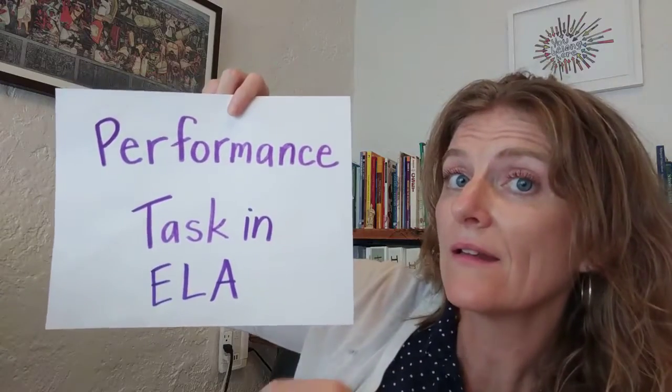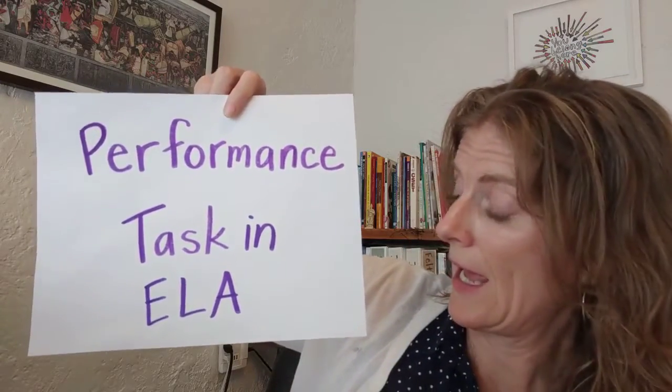So let's look specifically at what the CAASPP performance task is asking you to do — what is it assessing? We are specifically looking at the performance task part. Every year, what the CAASPP performance task asks you to do in English Language Arts is to read information. It might be two articles or three, eventually even four different texts — different sources about a topic. And then it's going to ask you to write about it.